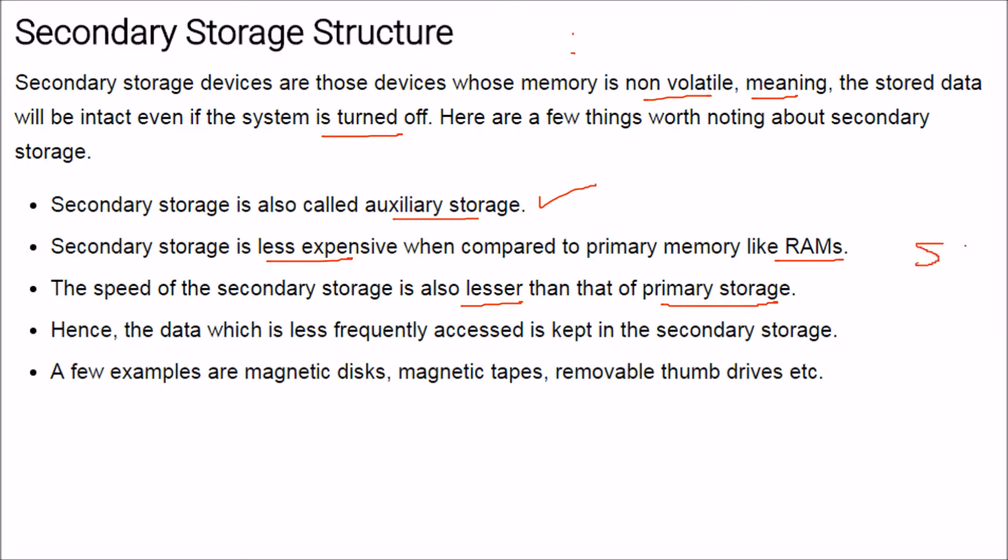Today's secondary storage, people are going towards the SSDs, solid state devices, but still most of us use the electromechanical type of disk, which is lesser than the RAM which are totally semiconductor memory. So the data which is less frequently accessed is kept in secondary storage, while the data which is accessed directly by the CPU is kept here.